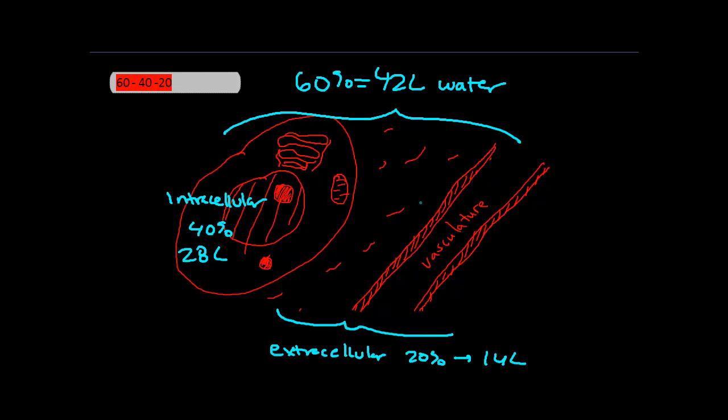This extracellular water can be further broken down. 75% of the extracellular water, or 10.5 liters, will be interstitial water, and the other 25%, or 3.5 liters, will be intravascular. What I'm drawing right there is an artery or vein, whatever you want to choose.